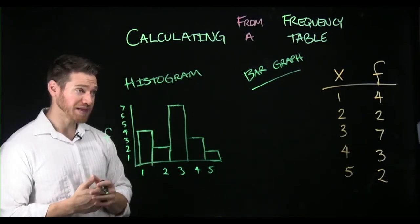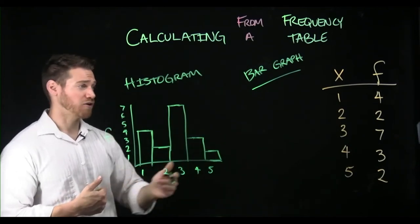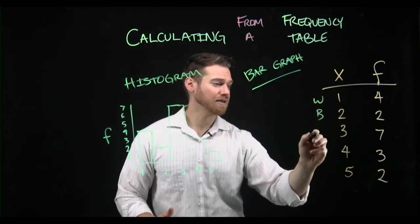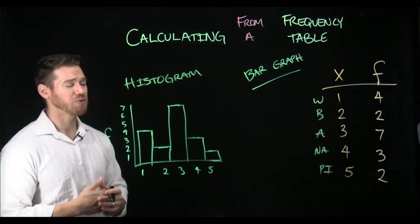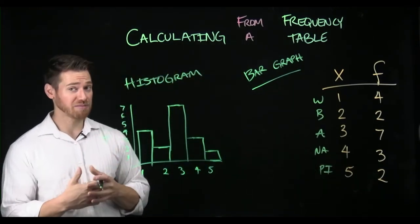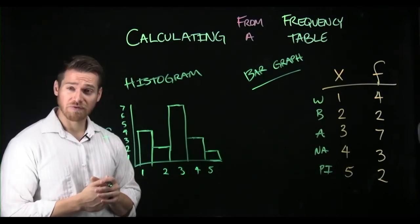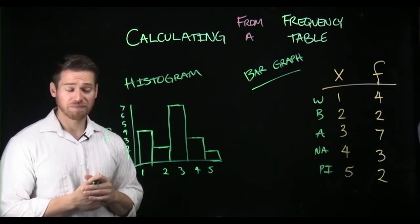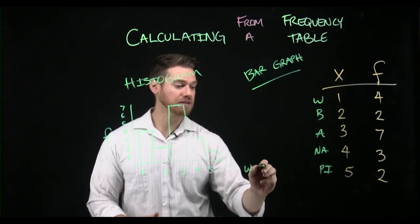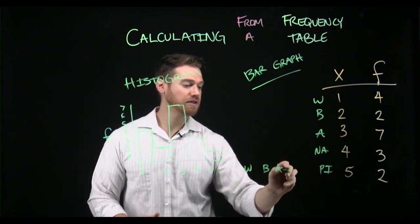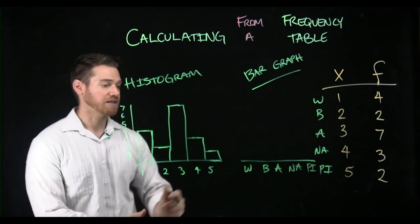If these data were discrete — say they were coded for something else, like different ethnic categories where one meant white, two meant black, three meant Asian, four meant Native American, and five meant Pacific Islander — those are discrete, they are nominal. The numbers aren't really numeric; they're just placeholders for the ethnicity. So we would put that on a bar graph, and we might then have the actual labels — white, black, Asian, Native American, Pacific Islander — on our x-axis instead of numbers.